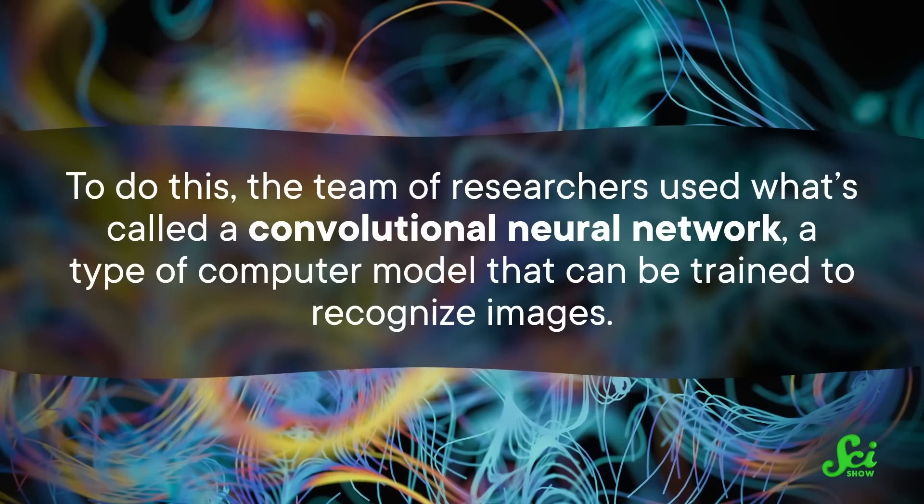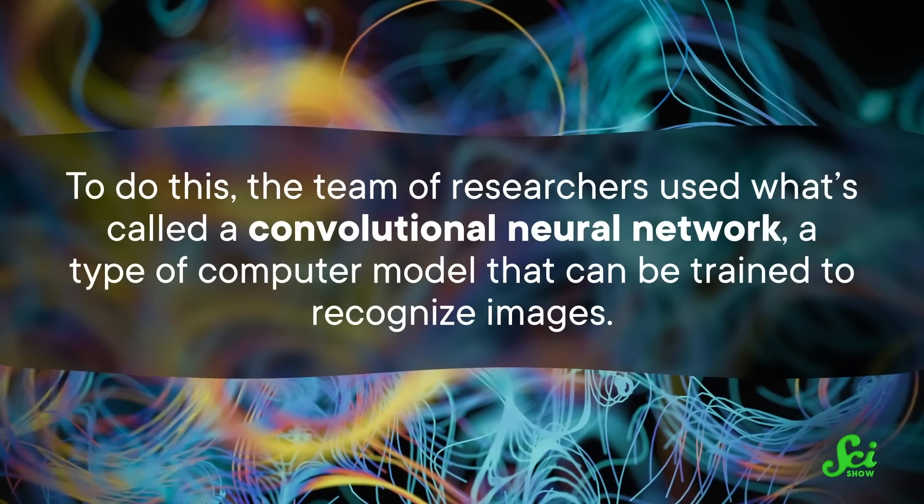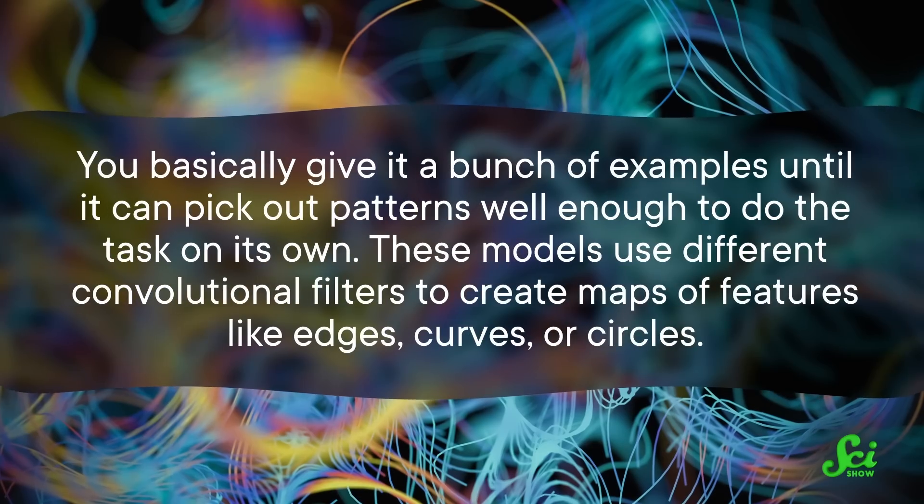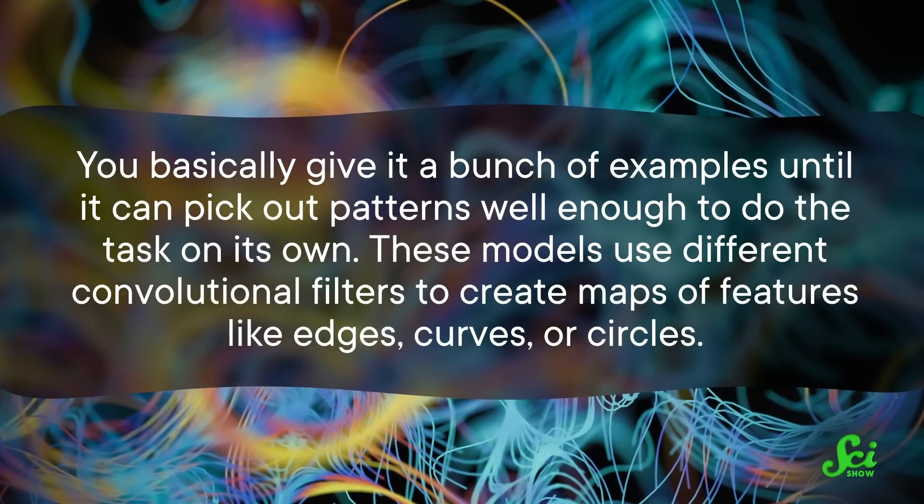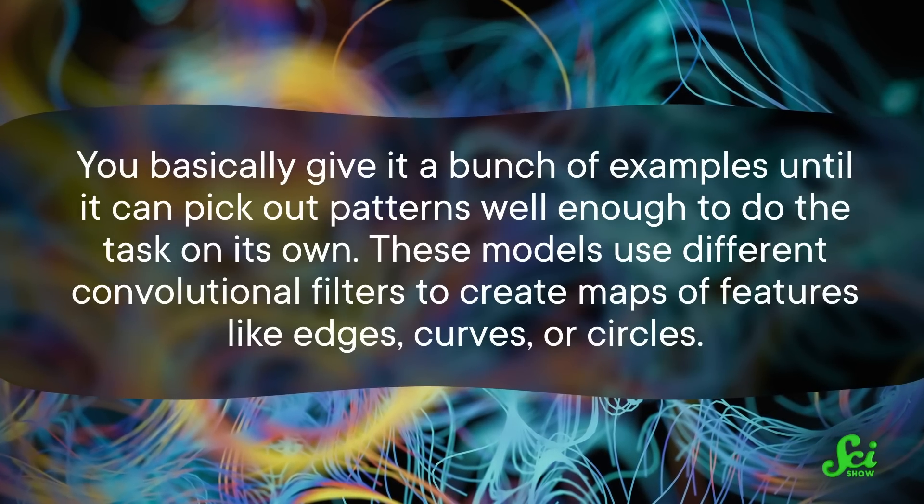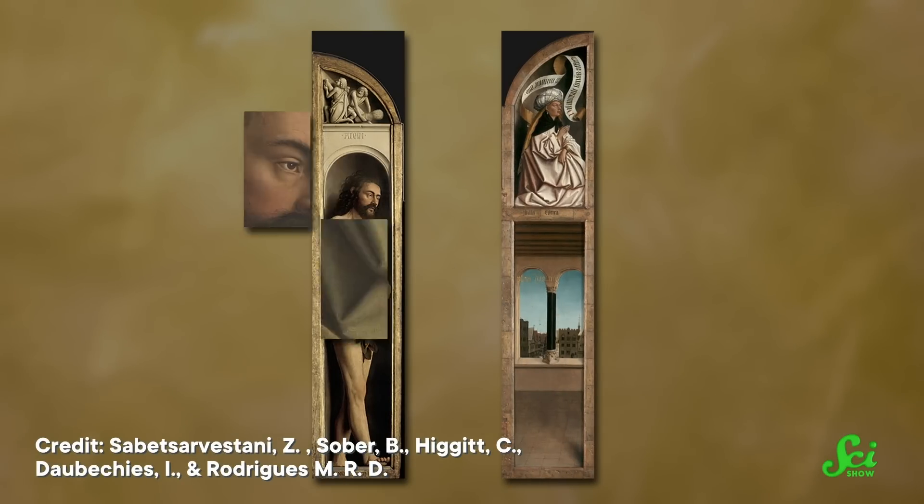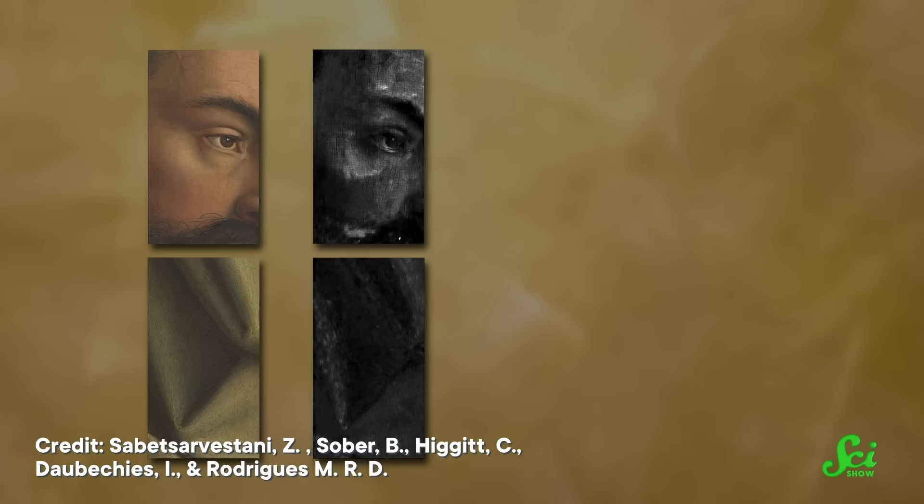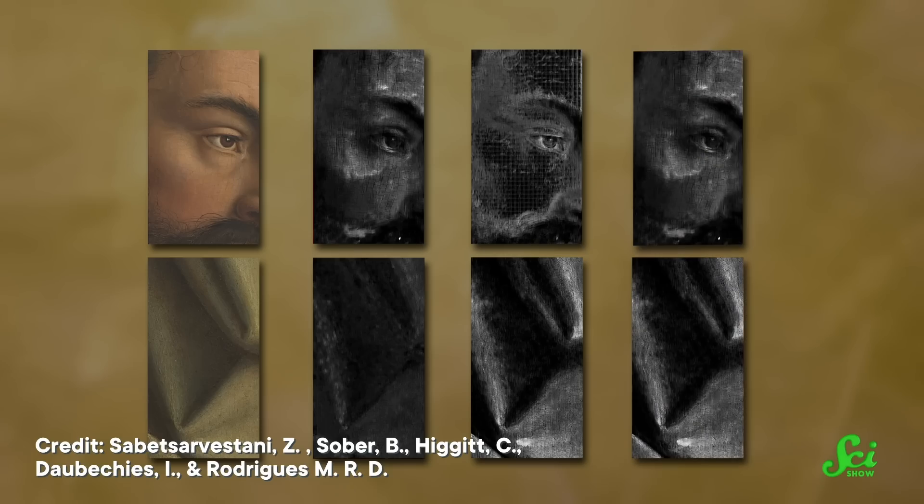So you can use that to train a computer to separate a superimposed image into two different ones. To do this, the team of researchers used what's called a convolutional neural network—a type of computer model that can be trained to recognize images. You basically give it a bunch of examples until it can pick out patterns well enough to do the task on its own. These models use different convolutional filters to create maps of features like edges, curves, or circles. So they basically summarize any image as a collection of features, and then they match this collection of features to some known object. In this case, the researchers trained a neural network to tease apart two images in one mixed image. And to get that to work, they worked backwards. They started with two regular photos of each side, and then they had a neural network generate two separate X-ray images based on each one.